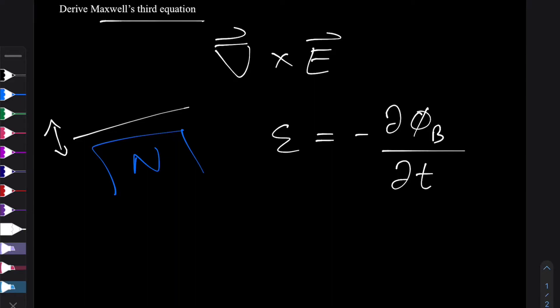This negative sign comes in from Lenz's law, which basically says the induced EMF is in a direction such that the magnetic field produced by this induced EMF opposes this magnetic flux change that causes it.